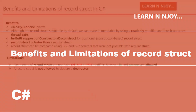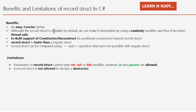Benefits of record struct: (1) Provides easy, concise syntax. (2) Although mutable by default, it can be made immutable using readonly, making it thread-safe. (3) Inbuilt support for deconstruct for positional constructor-based record structs. (4) Record struct is faster than a regular struct. (5) Record struct can be compared using == and != operators, which was not possible with regular structs. Limitations: (1) Parameters cannot have ref, out, or this modifiers, though in and params are allowed. (2) A record struct is not allowed to declare a destructor.